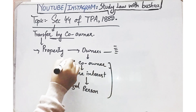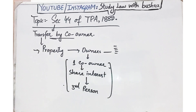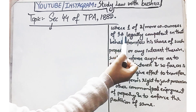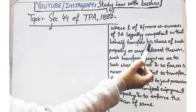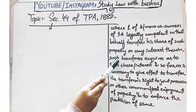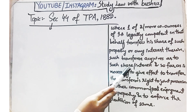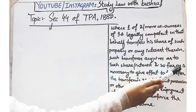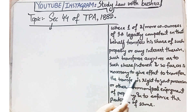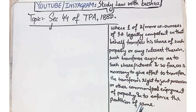Now when the interest is transferred to a third person, what conditions will apply? Starting with the bare language of this section: 'Where one of two or more co-owners of immovable property legally competent in that behalf transfers his share of such property or any interest therein, the transferee acquires as to such share or interest, and so far as is necessary to give effect to the transfer, the transferor's right to joint possession or other common or part enjoyment of the property and to enforce the partition of the same.'